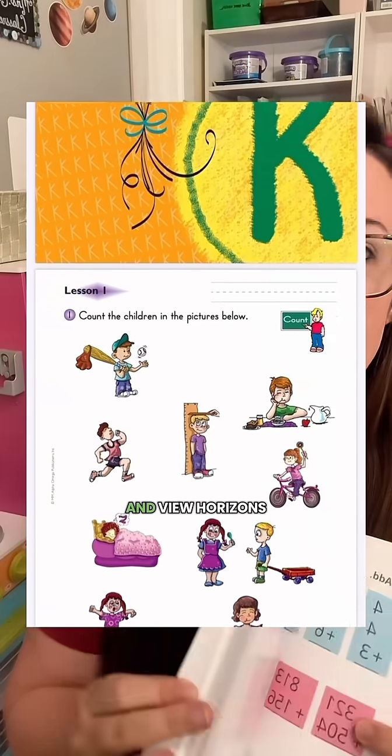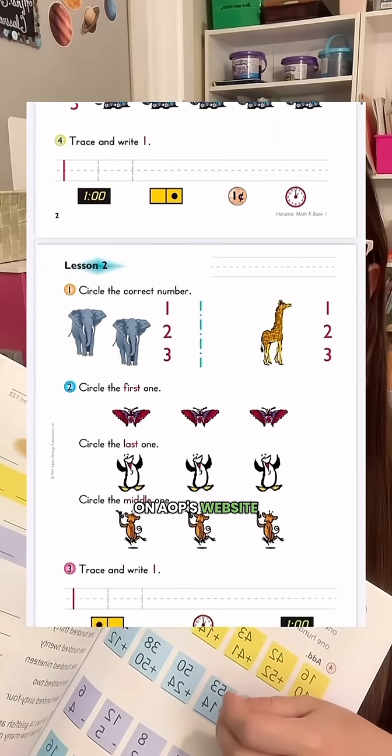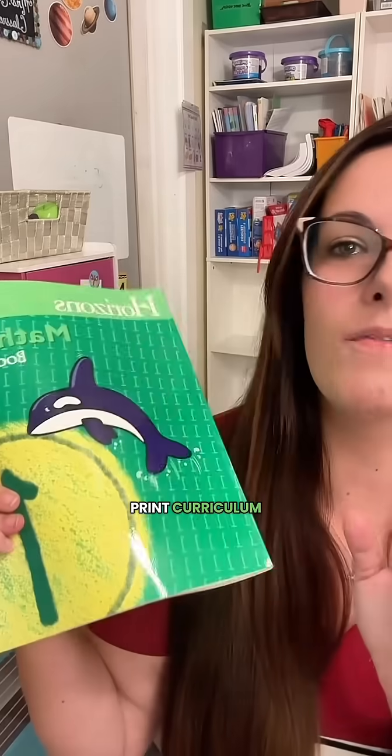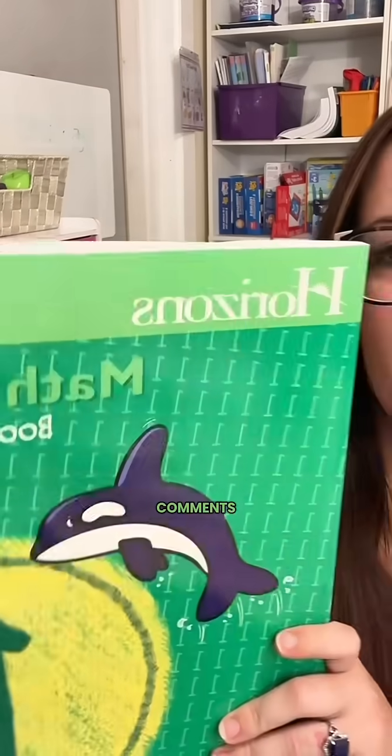Now, you can actually go on and view Horizons Math lessons for yourself on AOP's website. That's aop.com. I do have a coupon code. It's just 10, and that will give you 10% off of any of AOP's print curriculum. If you have any questions at all about Horizons Math or any of AOP's other curriculum, you can drop those in the comments.